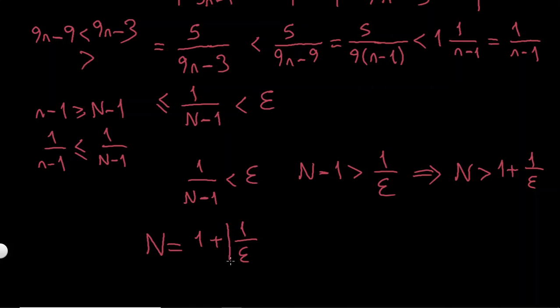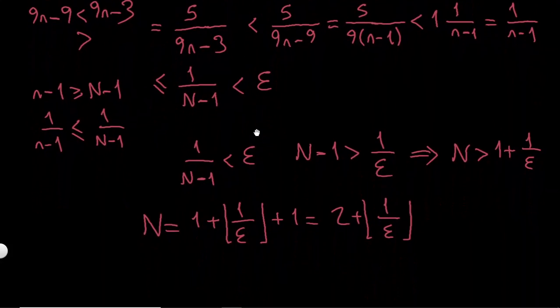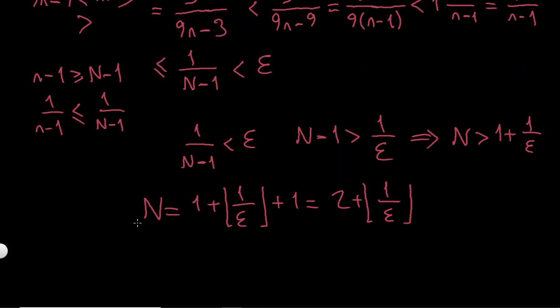So if I just take floor function of that and add another one here, which will be 2 plus floor of 1 over epsilon, I will be done. Technically, like for the last part, you can be as creative as you want. There are infinitely many such N's, and you can just find a different one from a different way.